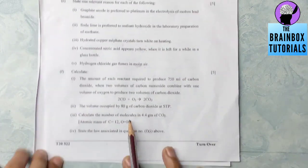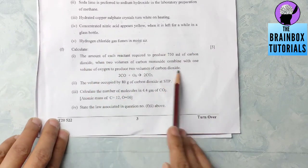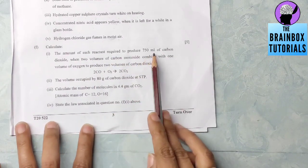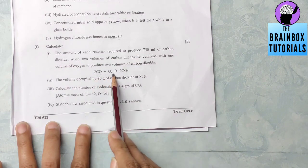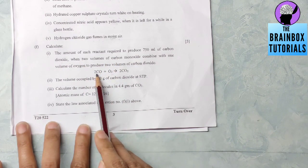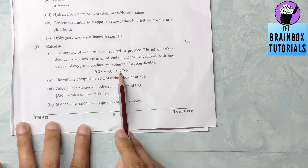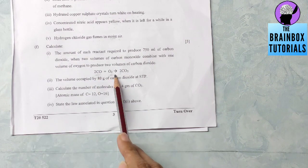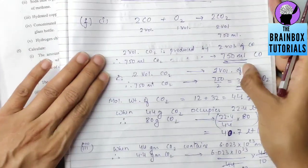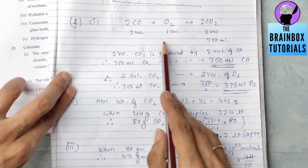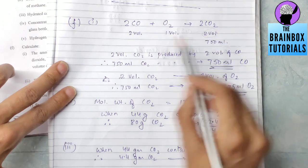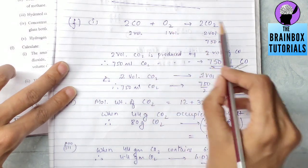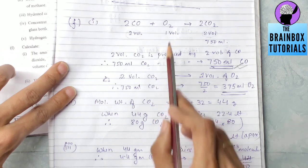Number F was from mole concept. The amount of each reactant required to produce 750 milliliter of carbon dioxide. Two volumes of carbon monoxide with one volume of oxygen to produce two volumes of carbon dioxide. First we will calculate the amount of each reactant. By Gay-Lussac's law we will write that two volumes of CO2 is produced by two volumes of CO, so 750 milliliter will be produced by 750 milliliter CO. And then for O2 you will write: two volumes of CO2 is produced by one volume of O2, so 750 will be produced by 375 milliliter of O2.